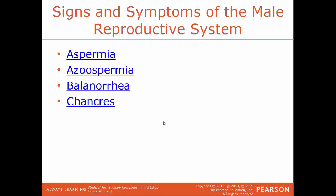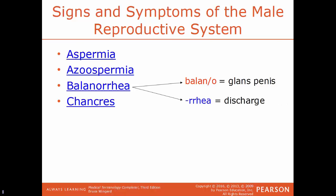Azoospermia is a condition where there is an absence of living sperm cells within semen — fluid is ejaculated but there are no sperm cells in it. Balanuria is a discharge from the head of the penis — Bolano referring to the glans penis and urea meaning discharge. Chancre is a type of painless ulcer that develops on the genitals, commonly found with sexually transmitted infections like syphilis.